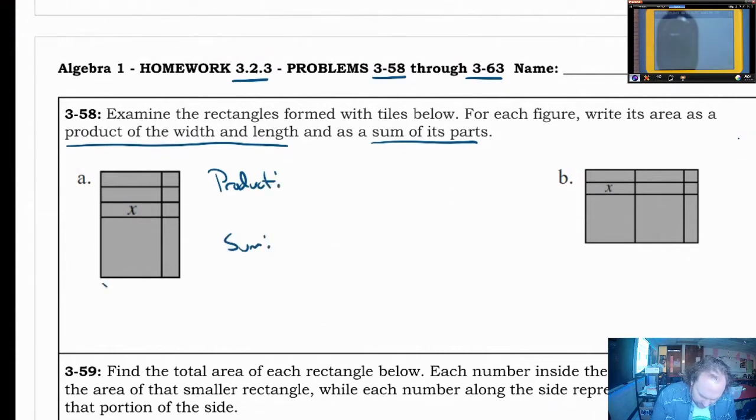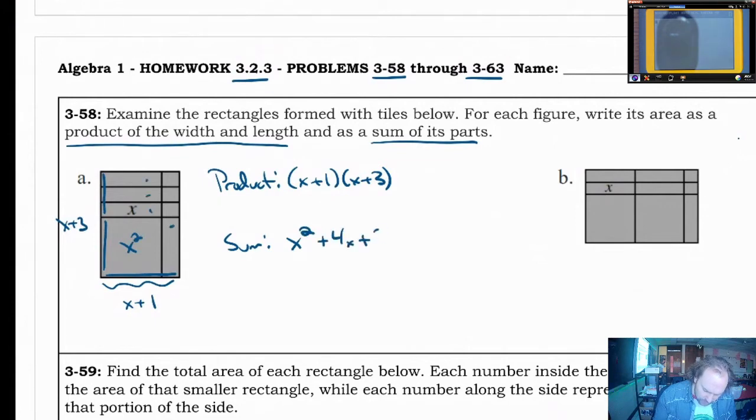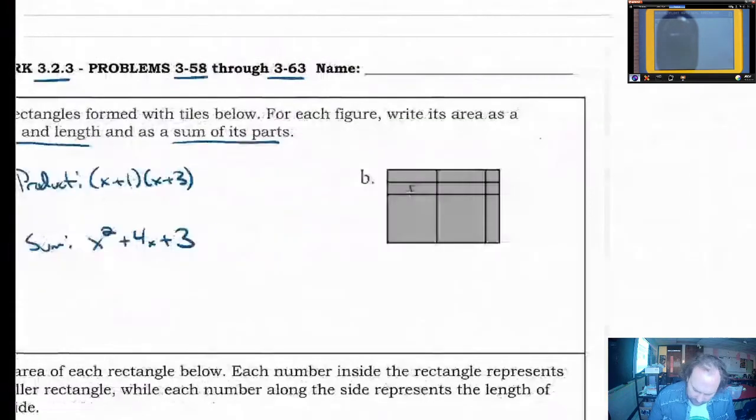The product, in this case, is going to be x plus 1 along the bottom side and x plus 3 on the top side. x plus 1, x plus 3. Don't forget both of those parts. As far as the sum goes, I see an x squared tile there. I see 1, 2, 3, 4 x tiles and 3 unit tiles.